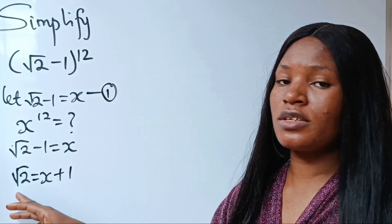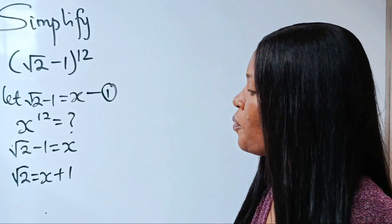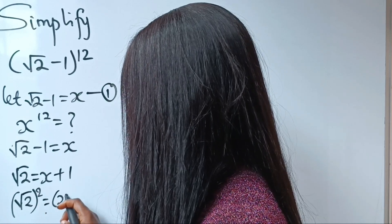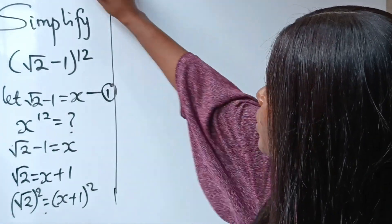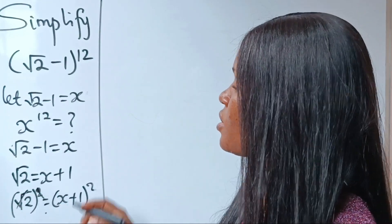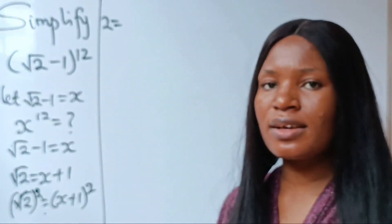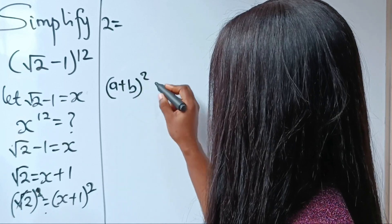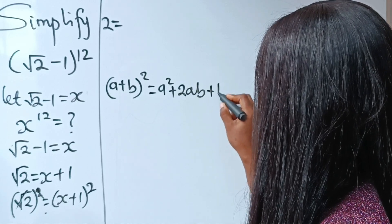In order to remove the square root, we are going to square both sides of the equation. So when we do that, we have √2 squared equals (x + 1) squared. Now we solve. The square root cancels, so we have 2 equals (x + 1) squared. This uses the algebra identity: (a + b)² = a² + 2ab + b².